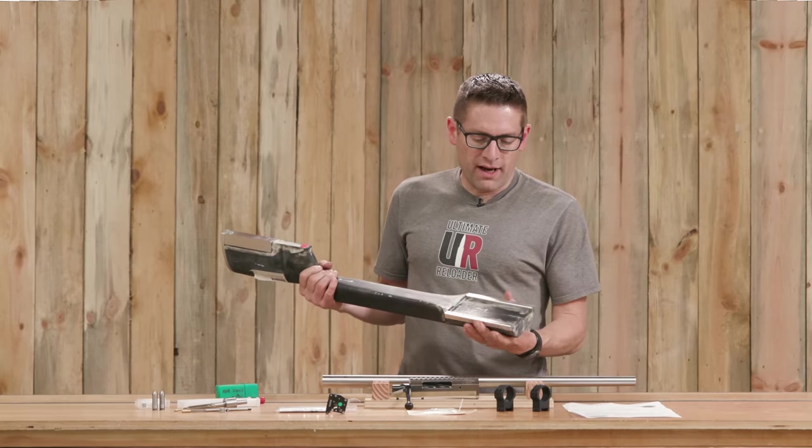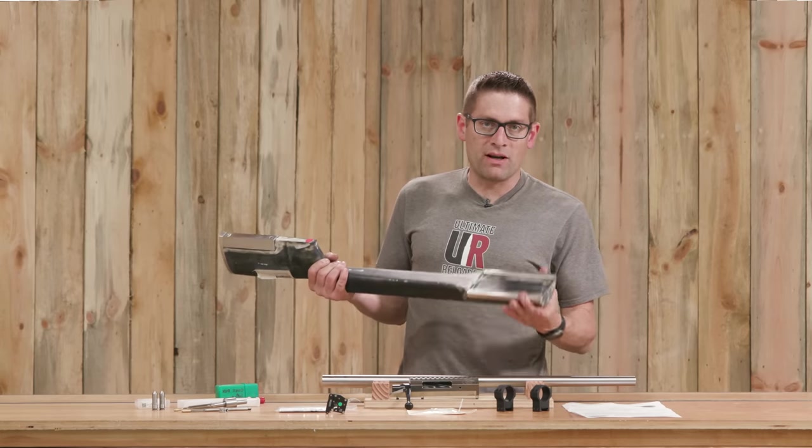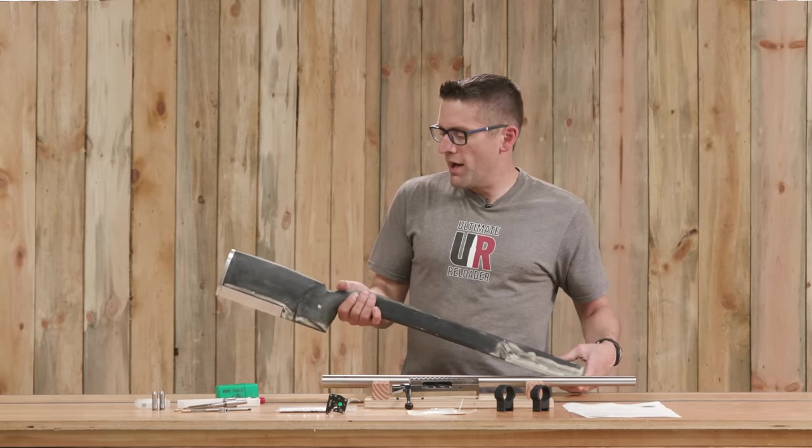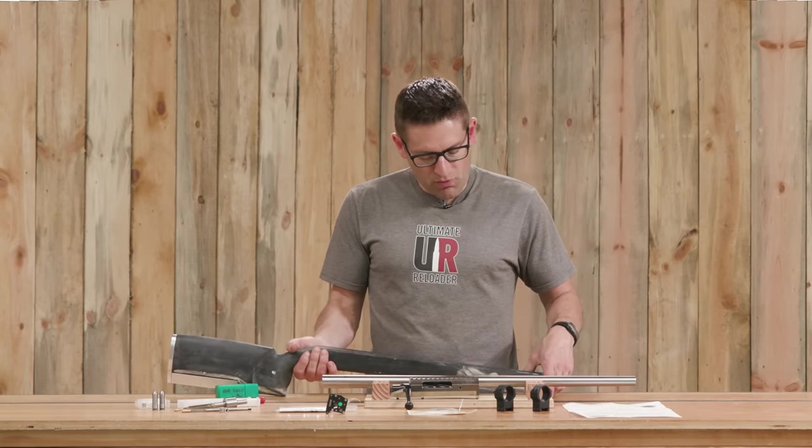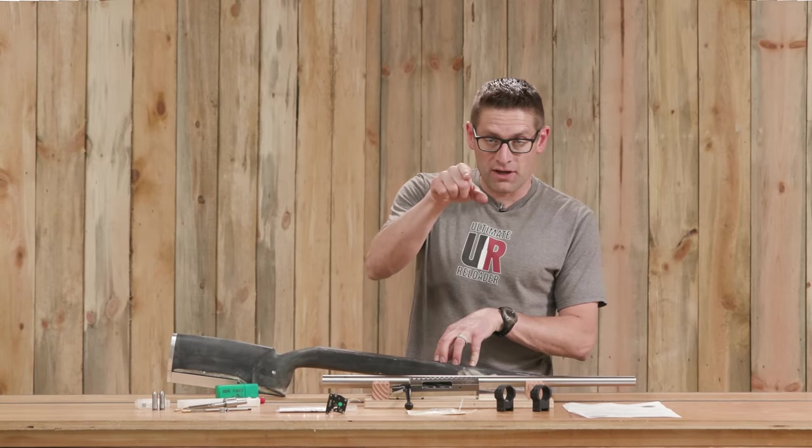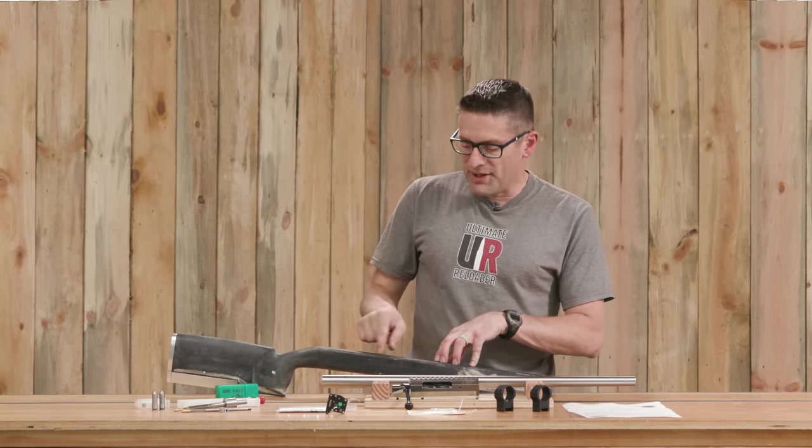It's got a four inch wide bag rider integrated right into the stock. The forend has this four inch width. This thing is really cool. And what will be fun about this is this will be the first time in a future video where I do a complete inletting job.